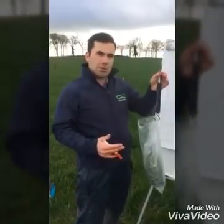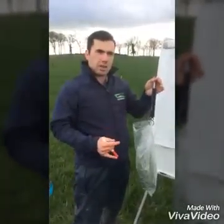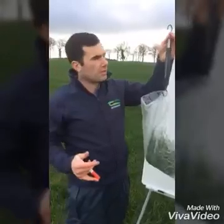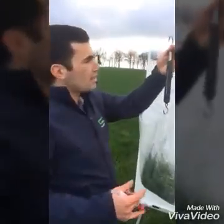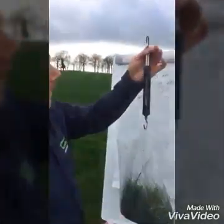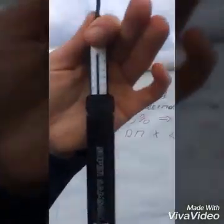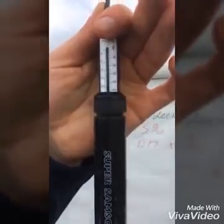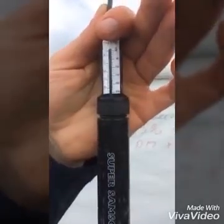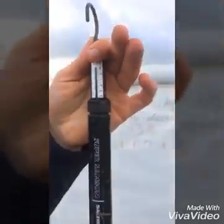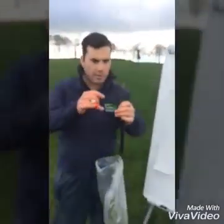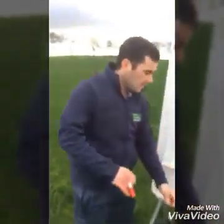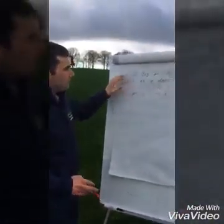Now we're going to calculate the amount of grass on a kilos of dry matter per hectare basis. This is the bag of grass we just cut in this paddock, and it weighs 260 grams. To work that out on a kilos of dry matter per hectare basis, we use this formula.